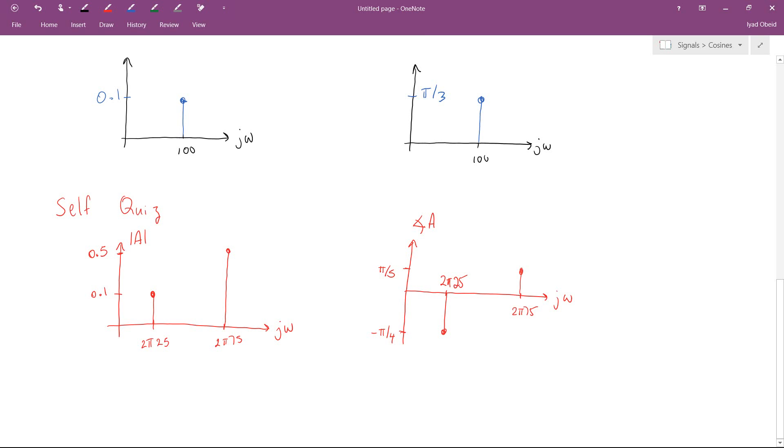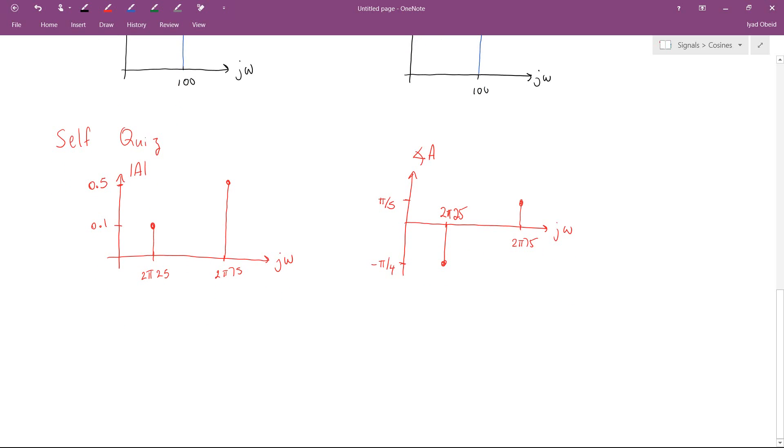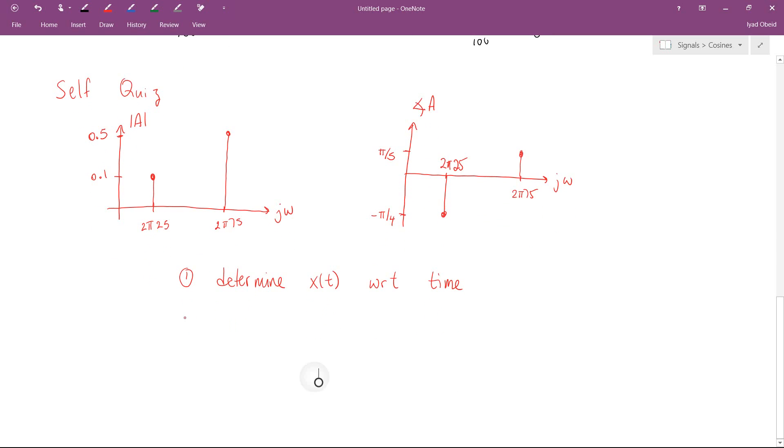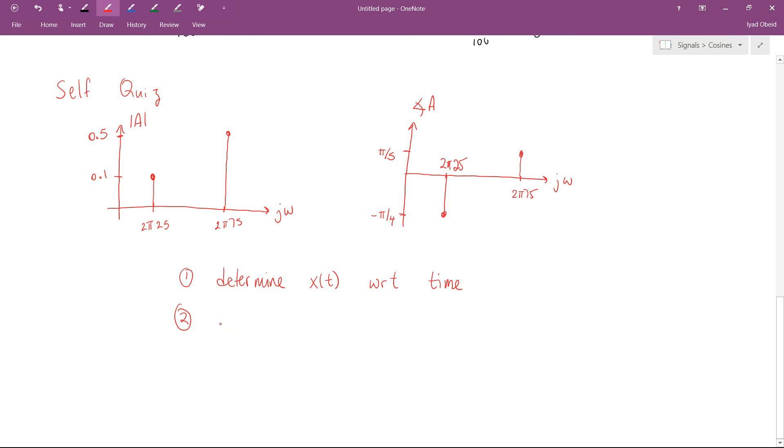So your challenge to see if you really understand this video is, step one, determine the cosine expression, which in this case is going to be a sum of cosine expressions. So determine x of t with respect to time. In other words, write the cosine functions as a function of time. And step two, plot the signal in MATLAB. And if you can do that, you probably have a pretty good understanding of what's going on in this video.